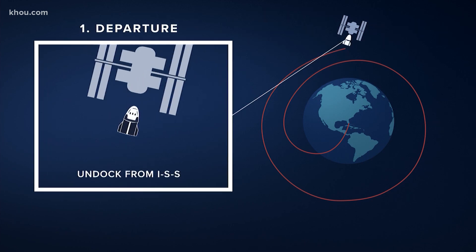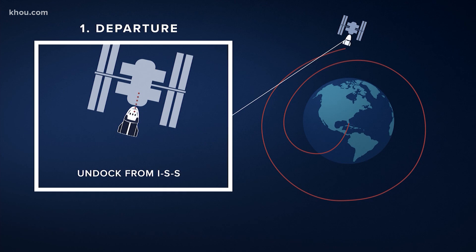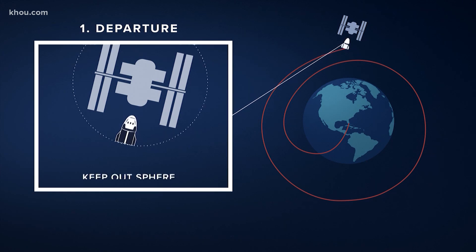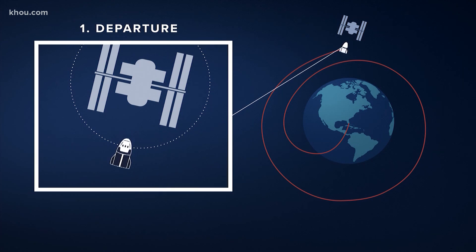The first step is to undock from the ISS. After the capsule has been packed up and prepped for undocking, Dragon will back away and slowly make its way outside of the keep-out sphere. That's a safety zone around the orbiting laboratory.